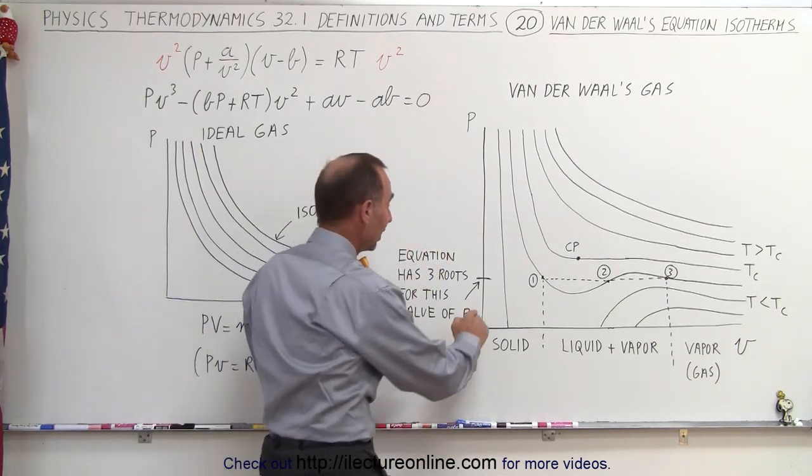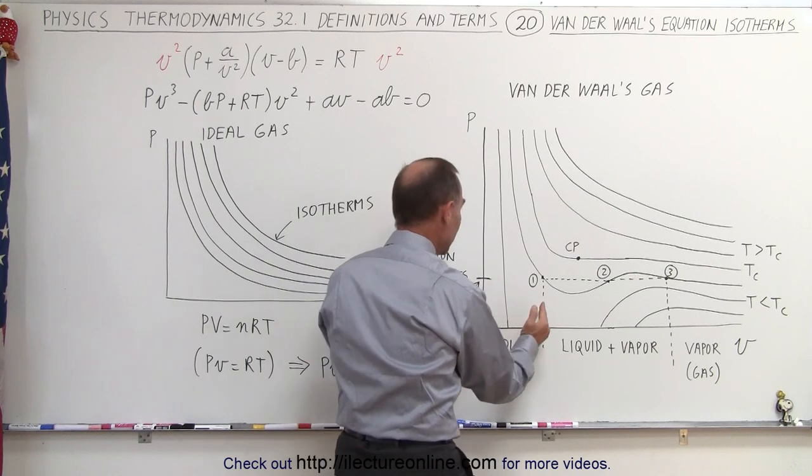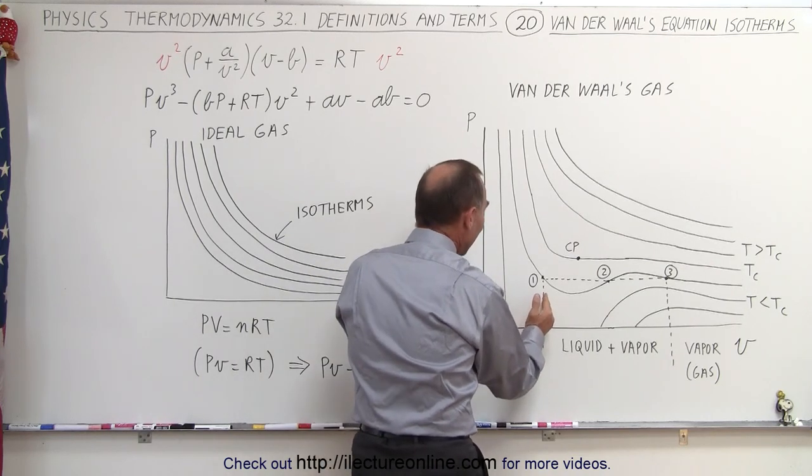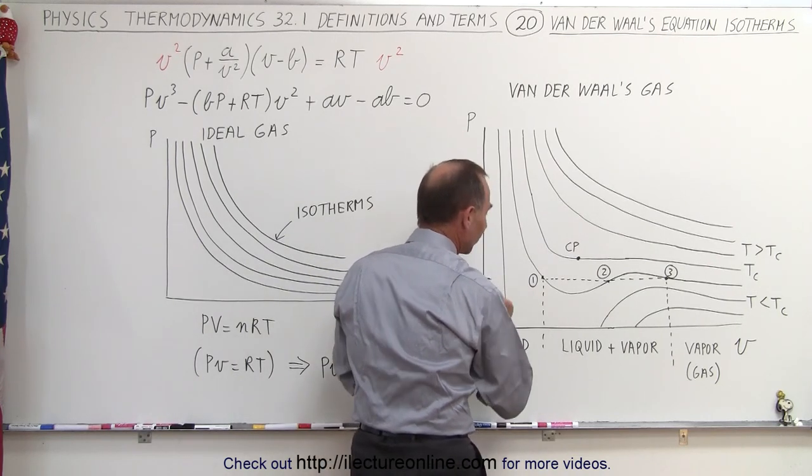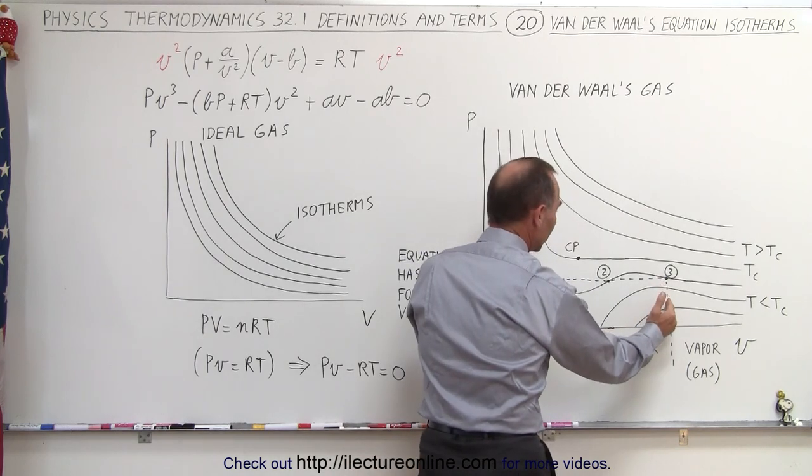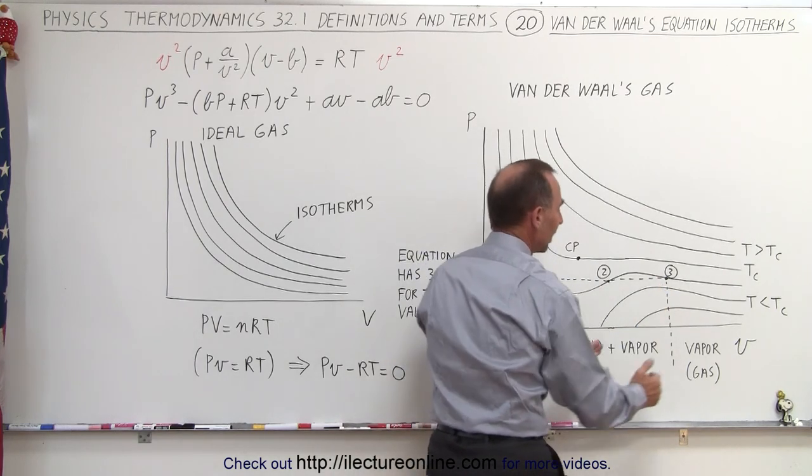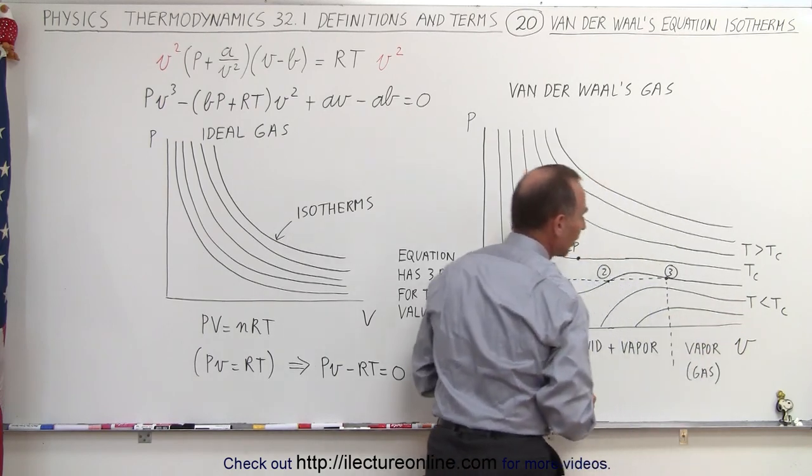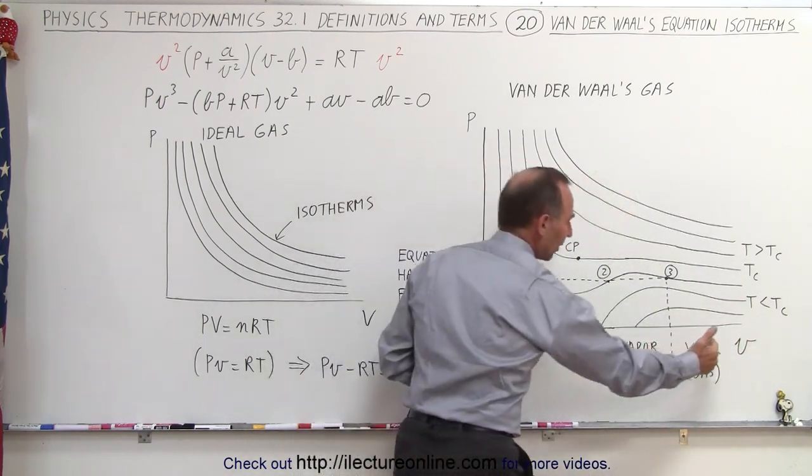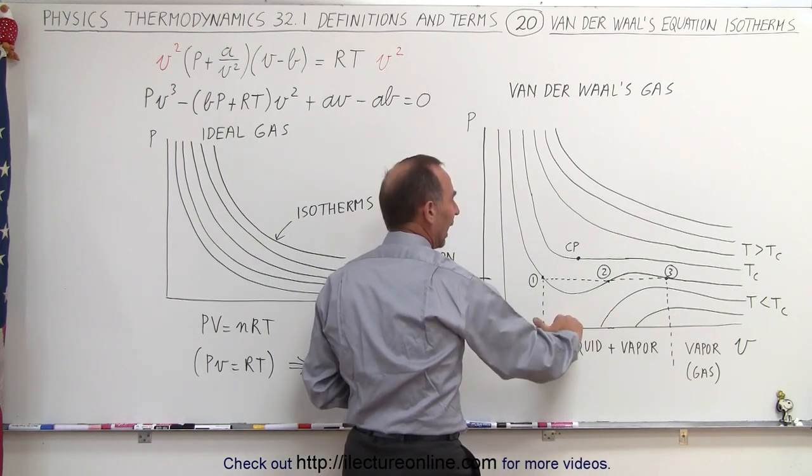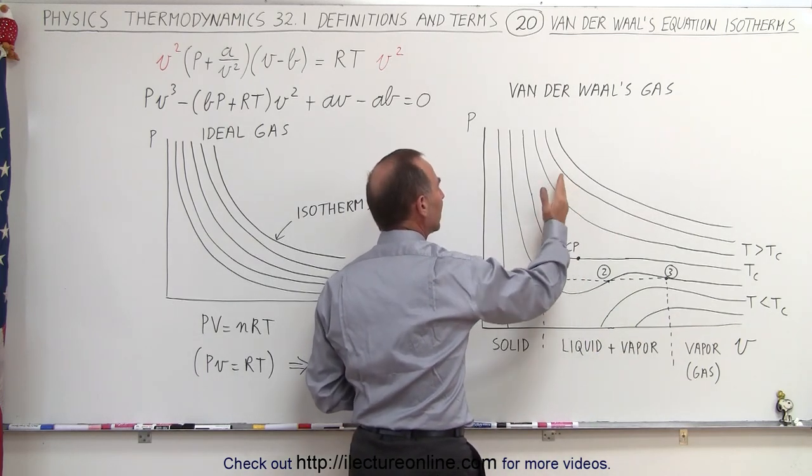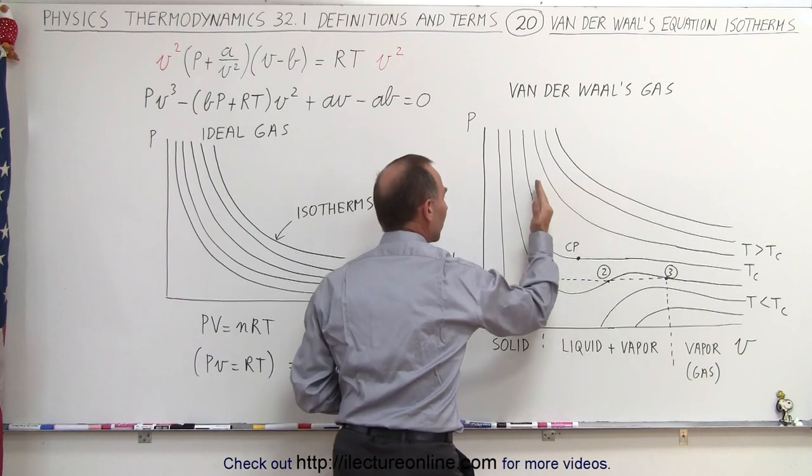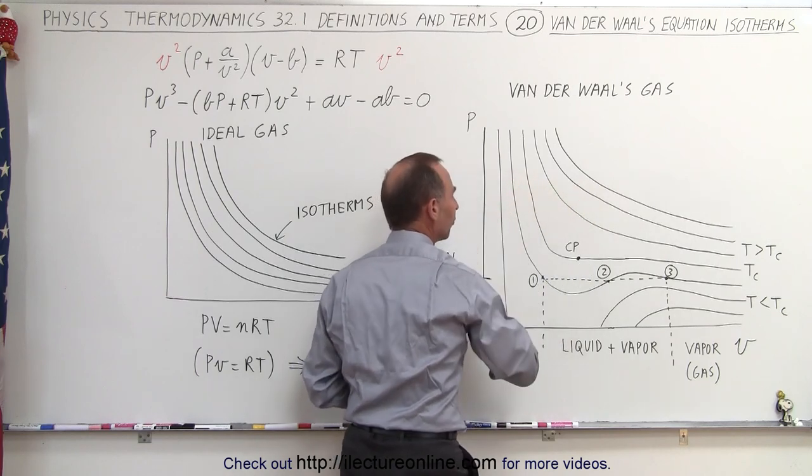But notice what this means is that for this particular value for p, the gas is actually in a solid state over here. Here it will be in a liquid and vapor combination state, and at volumes greater than that, it will then be at a vapor state. You can see then, as the volume decreases and the temperature increases, you will need greater pressure in order to compress it into a solid form.